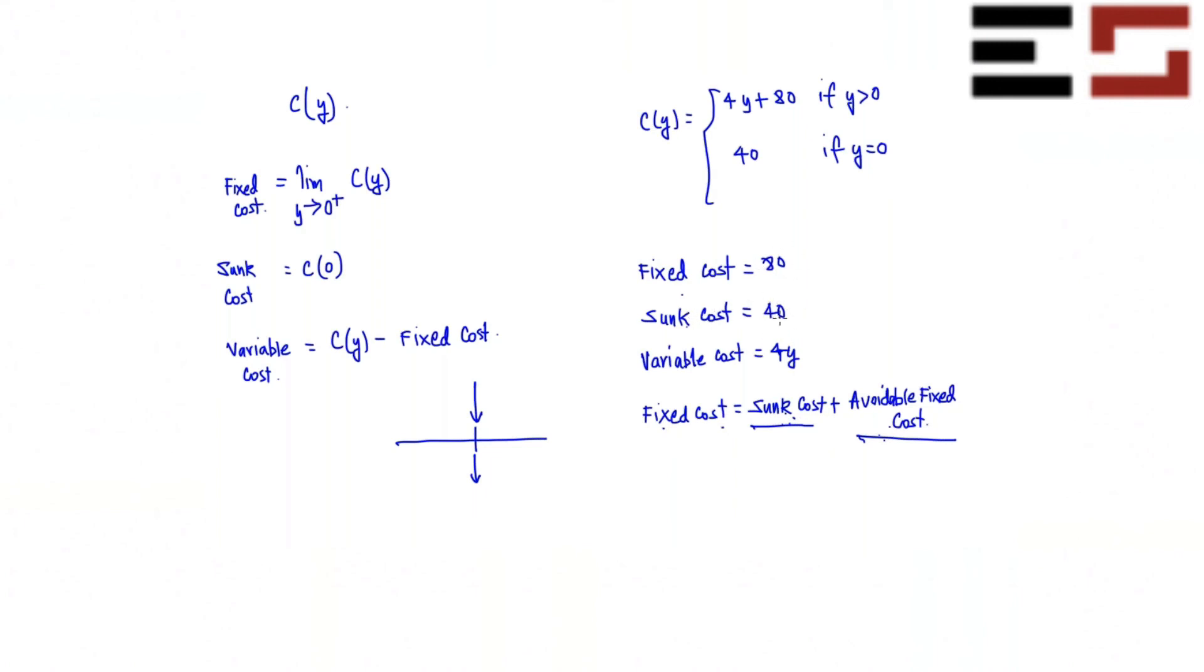So the two together gives you fixed cost. So what is the avoidable component of the fixed cost in this case? 40. What is the sunk cost in this case? 40. 40 plus 40 is 80 and that's your fixed cost. So sunk cost is actually part of fixed cost. Is that clear? Okay. Thank you.